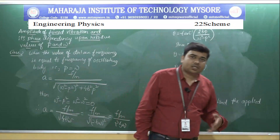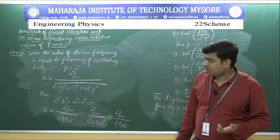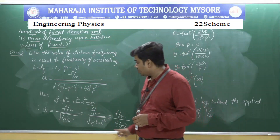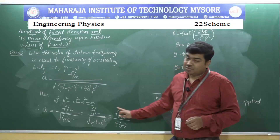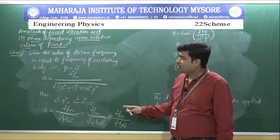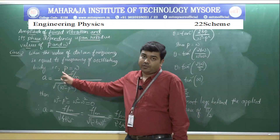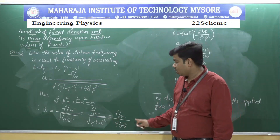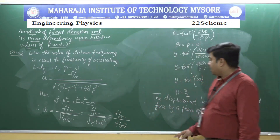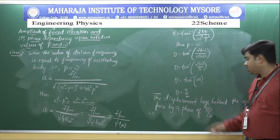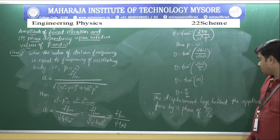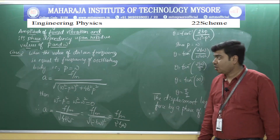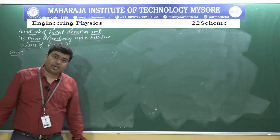This special case — where the frequency of the applied force equals the natural frequency of the oscillating body — is called resonance. At resonance, the amplitude becomes maximum, given by F/(m * 2b * omega), and the phase difference is pi/2, meaning the displacement lags behind the applied force by pi/2.